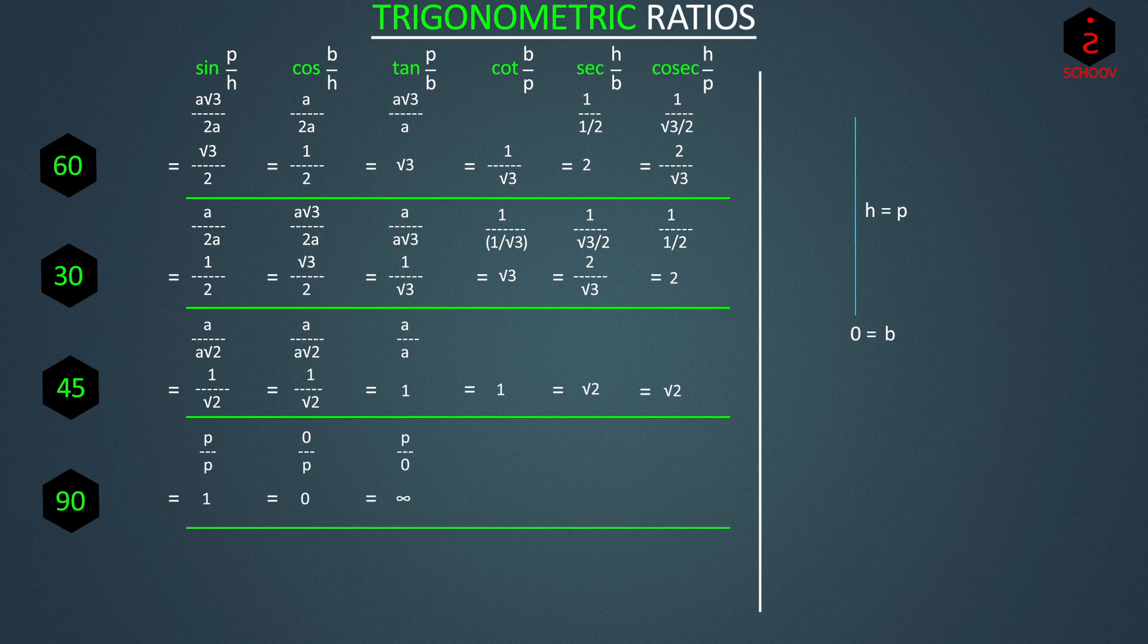Cot is 1 by tan, so cot 90 is base by perpendicular, 0 by P, that is 0. Sec 90 is 1 by cos 90, which is 1 by 0, infinity. And cosec 90 is 1 by sin 90, that is 1 by 1, which is equal to 1.